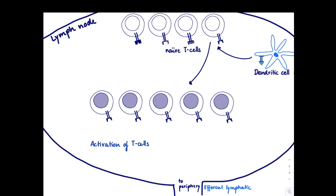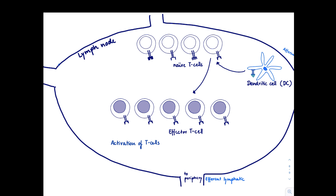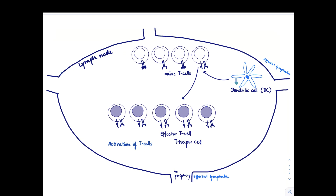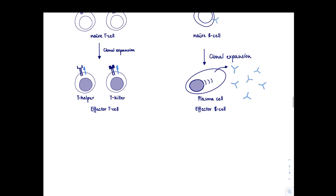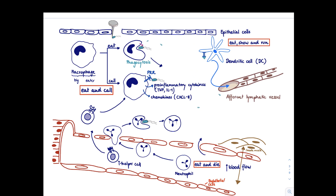A CD4 T cell, once activated, becomes a so-called T helper cell. As the name says, a T helper cell helps other cells to do a better job. A CD8 T cell becomes a T killer cell, and as the name implies, a killer cell can kill other cells. The most important distinction is between naive T cells and effector T cells. I've visually shown that the effector T cell has a blue-shaded nucleus, to remind you this is a completely different cell — it has different genetic expression and can really help in the immune response.